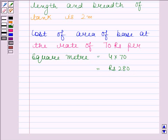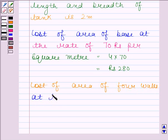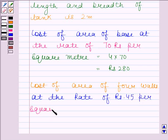Now cost of area of 4 walls at the rate of Rs. 45 per square meter is equal to 16 into 45 and this is equal to Rs. 720.